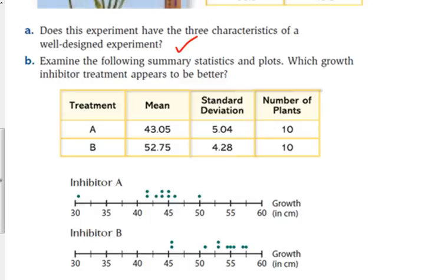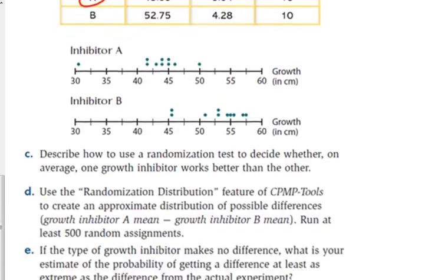So, our average stem length here is quite a bit less. It's not quite 10 centimeters, but it's about 9 centimeters or so. If we look at these dot plots, you can tell the majority of our data for inhibitor A is much lower than the data for inhibitor B. And they purposefully use the same scale so that you can just visually look at this and compare the data. So, it seems like treatment A works better.